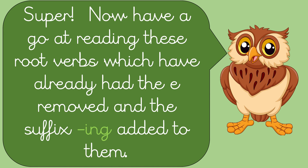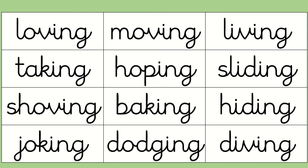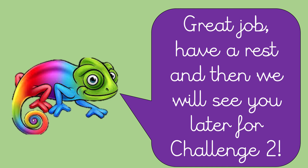Now you have a go at reading these verbs, which have already had the E removed and the suffix I-N-G added. Pause the video if you need to. The first one was 'loving', 'taking', 'shoving', 'joking', 'moving', 'hoping', 'baking', 'dodging', 'living', 'sliding', 'hiding', 'diving'. Great job. Have a rest and then we will see you later for challenge two. Well done, everybody — that was fab work. Great job.